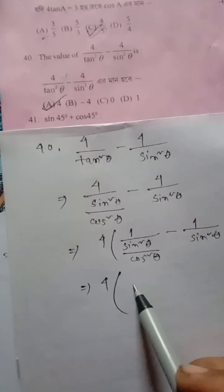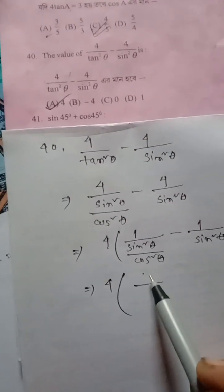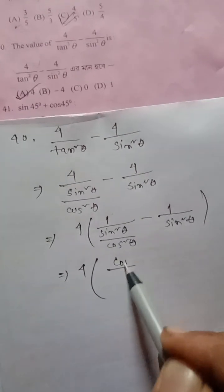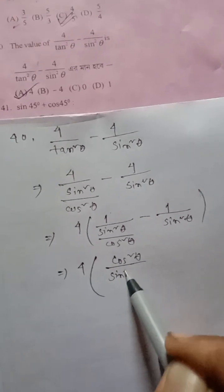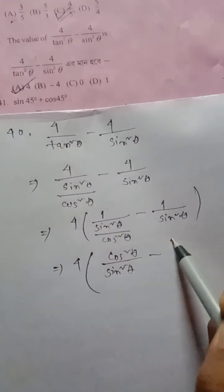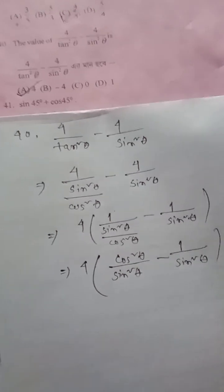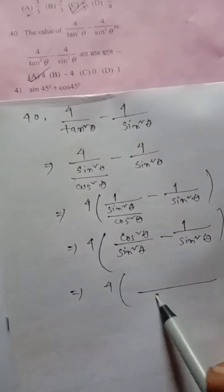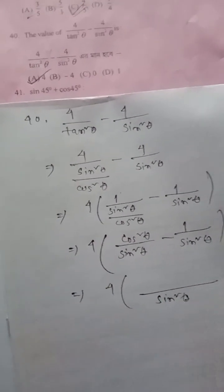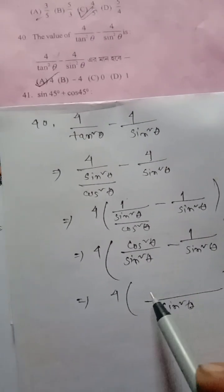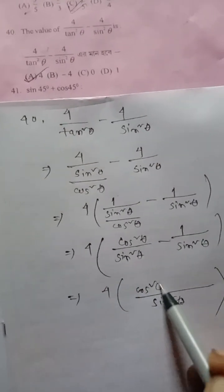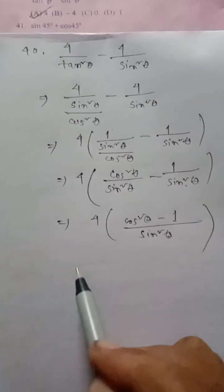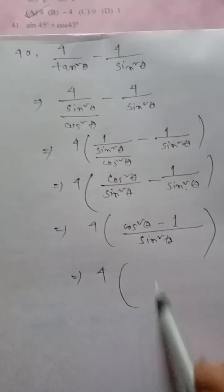Taking the reciprocal, 1 by (sin squared theta over cos squared theta) becomes cos squared theta by sin squared theta, minus 1 by sin squared theta. Taking sin squared theta as the LCM, it becomes 4 into (cos squared theta minus 1) over sin squared theta, where sin squared theta cancels to give cos squared theta minus 1.